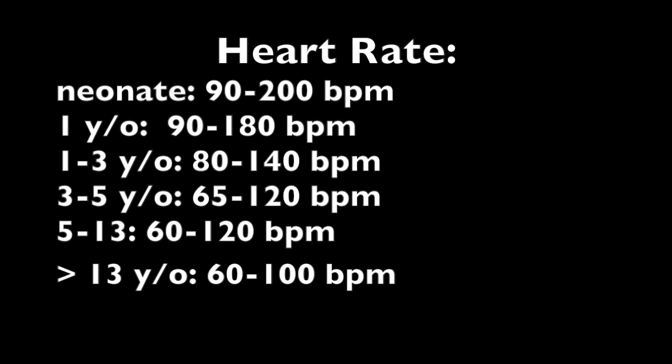Ages 3 to 5 are almost normal, but just a little elevated in the upper and lower limit of normal. Then 5 to 13 is in kind of the same range. And by greater than 13 years old, they should definitely be in the range of an adult, which is 60 to 100 beats per minute.